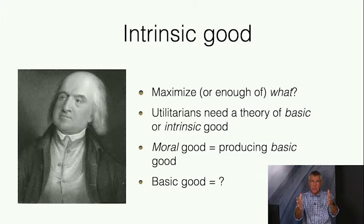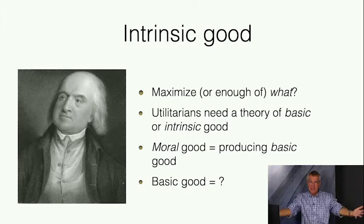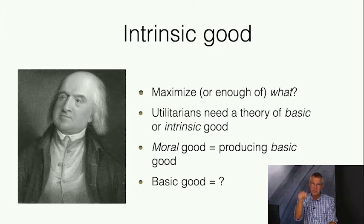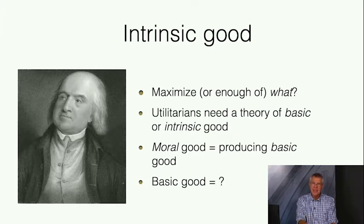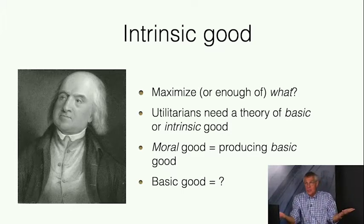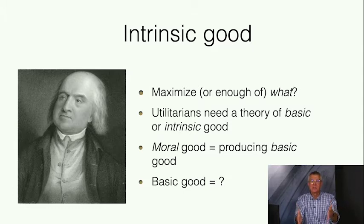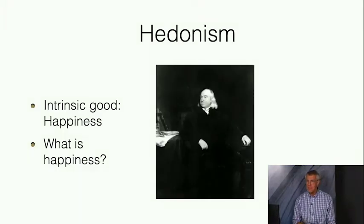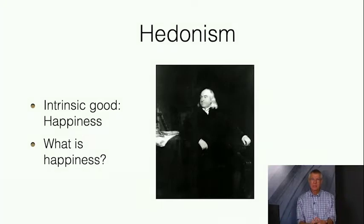You measure the value of actions in terms of the value of consequences. How do you judge the value of consequences? That's a question of judging the intrinsic good—the things that make consequences good or bad. The moral good, on any consequentialism or utilitarianism, consists in producing, or having a tendency to produce, the basic good. But what's the basic good? For Bentham and for Mill, the answer is happiness. The intrinsic good is happiness. But what is happiness? There are different conceptions.